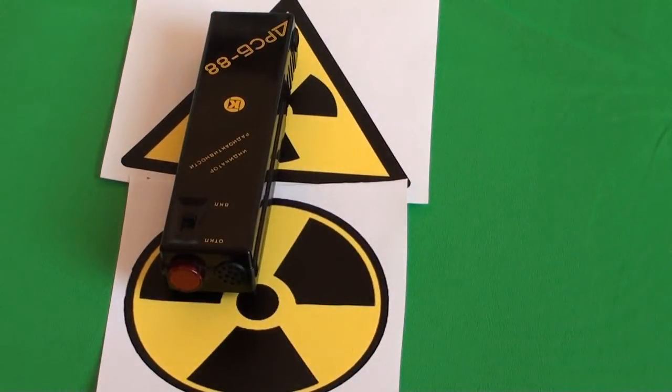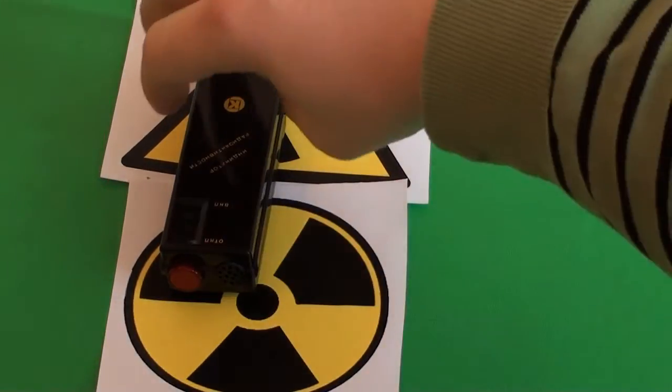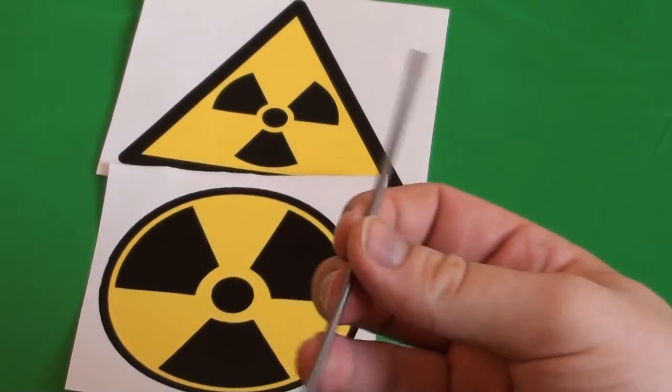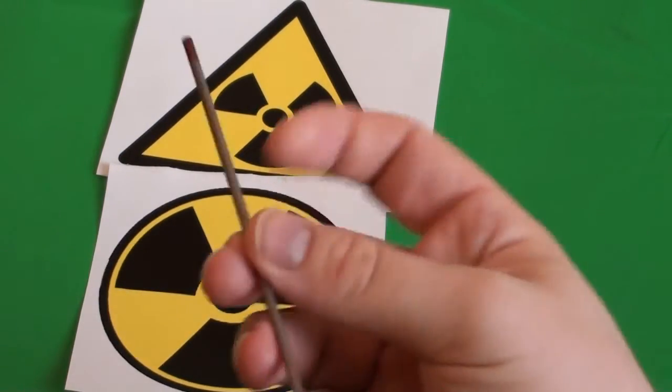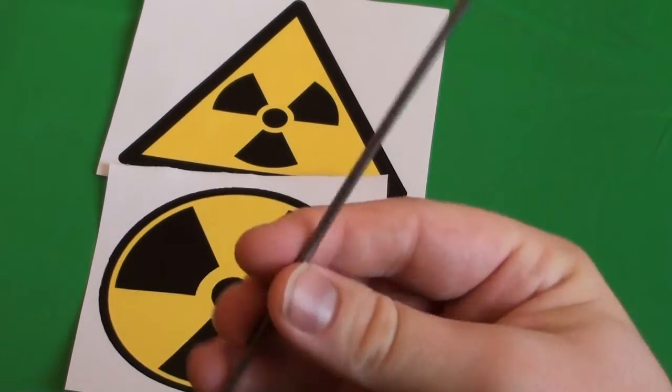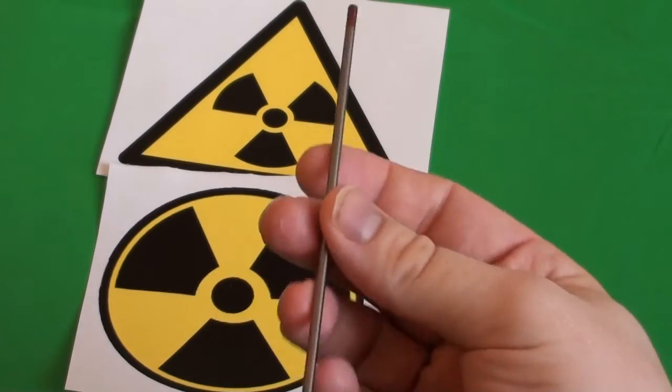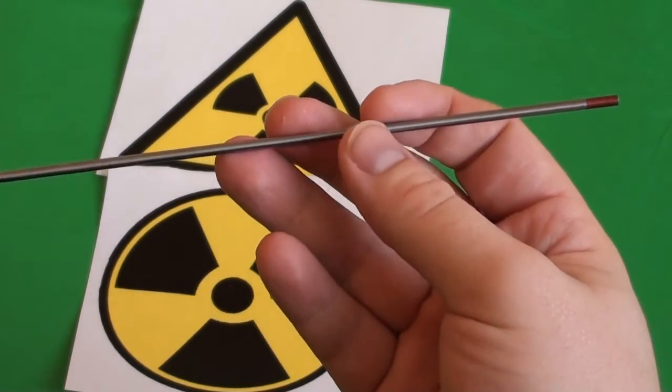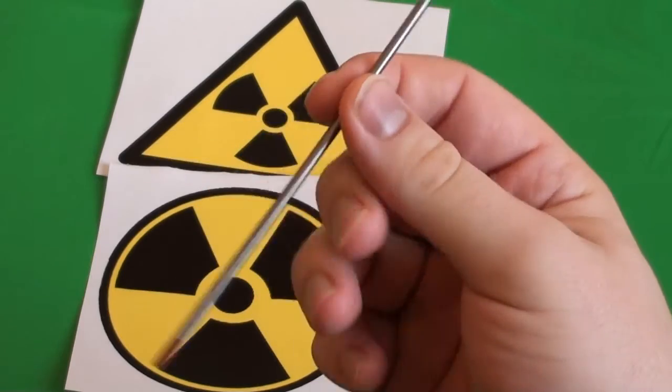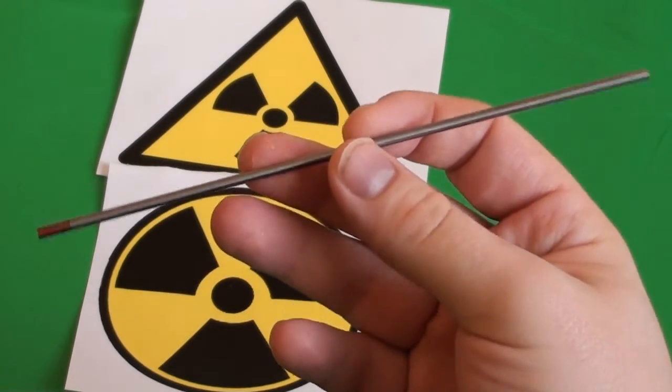And what is the radioactive material? It is this. This is a radioactive rod and you may ask yourself why is it radioactive? Well, this is a welding electrode which is composed of tungsten and thorium.